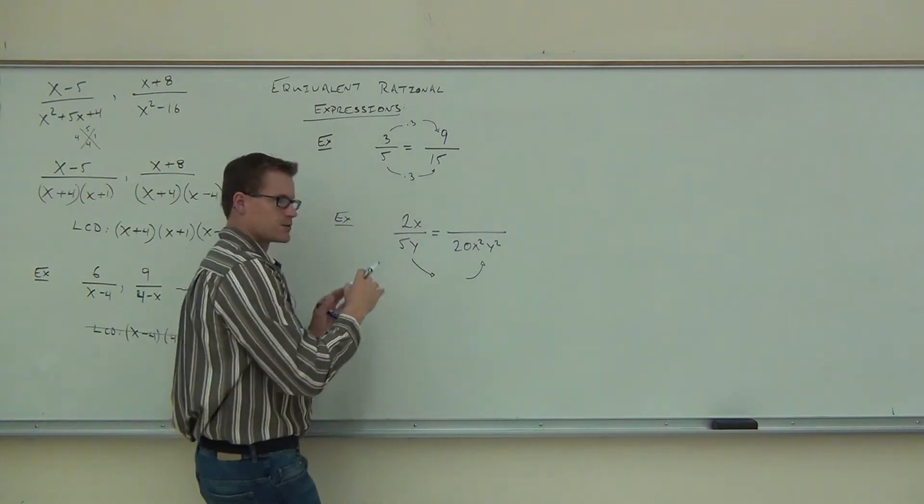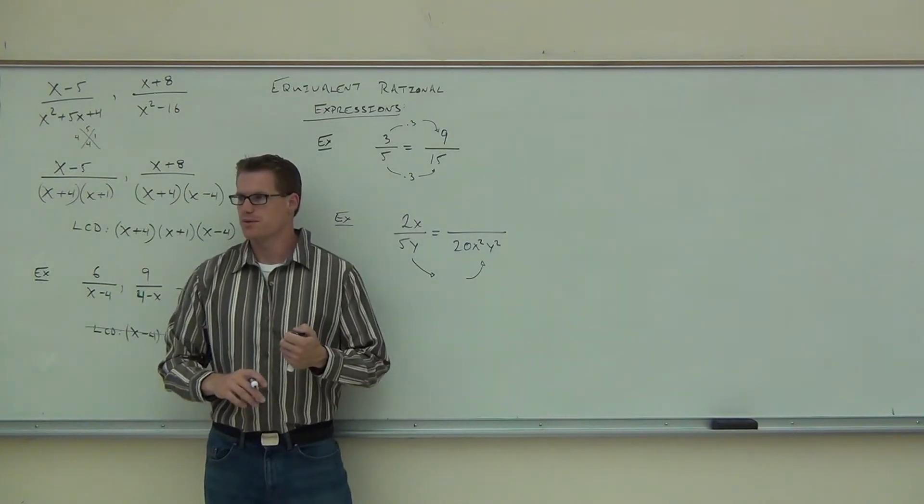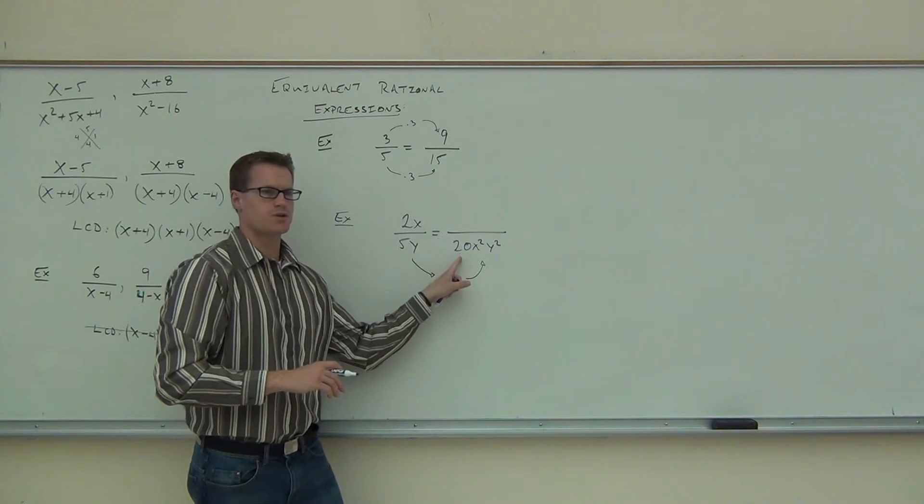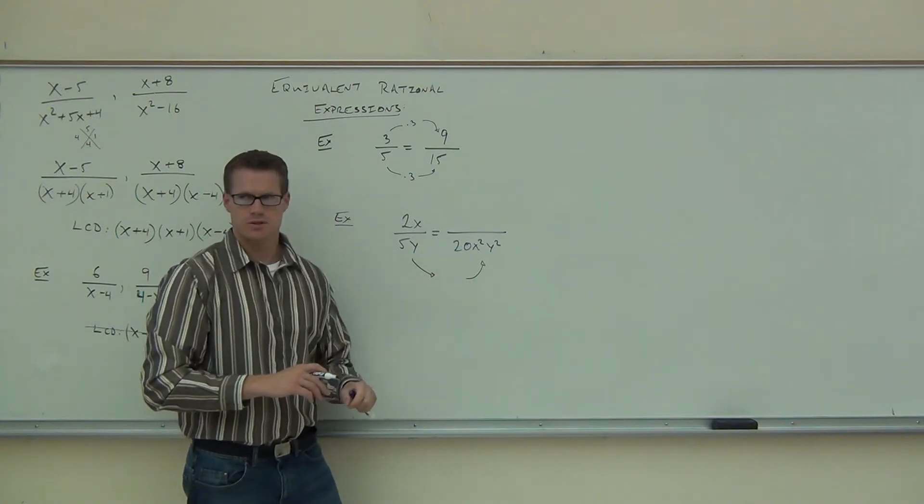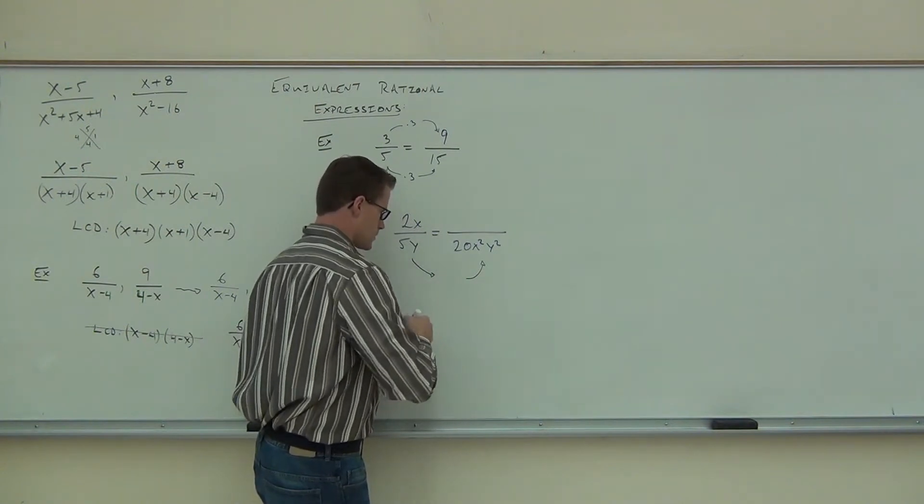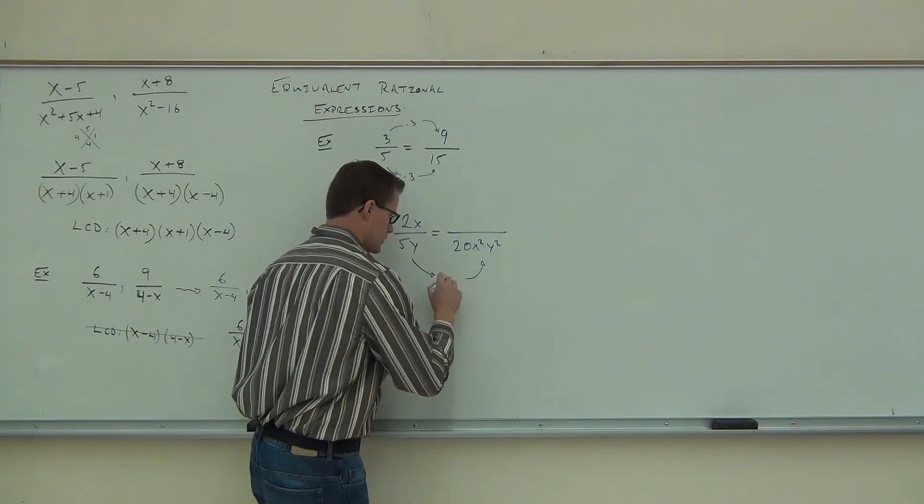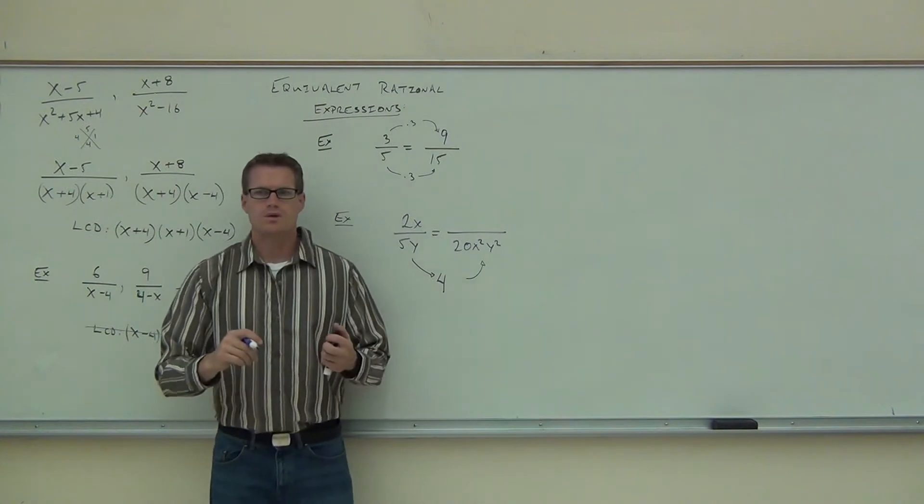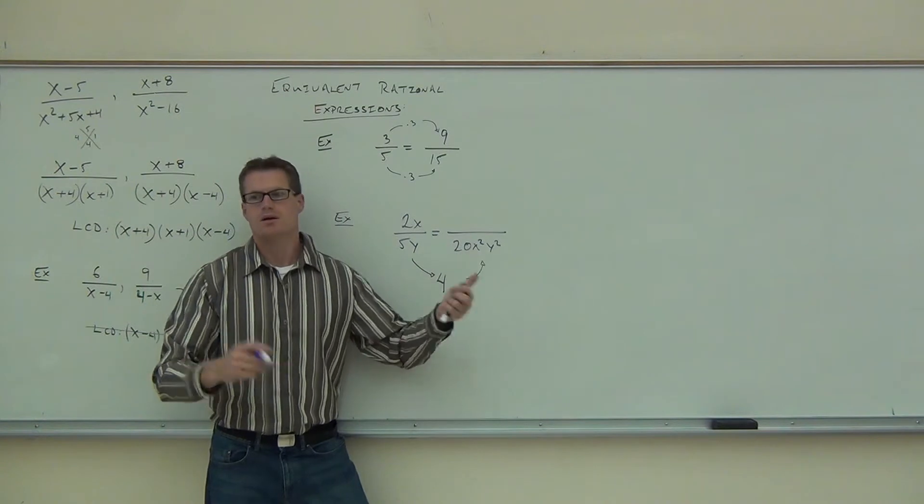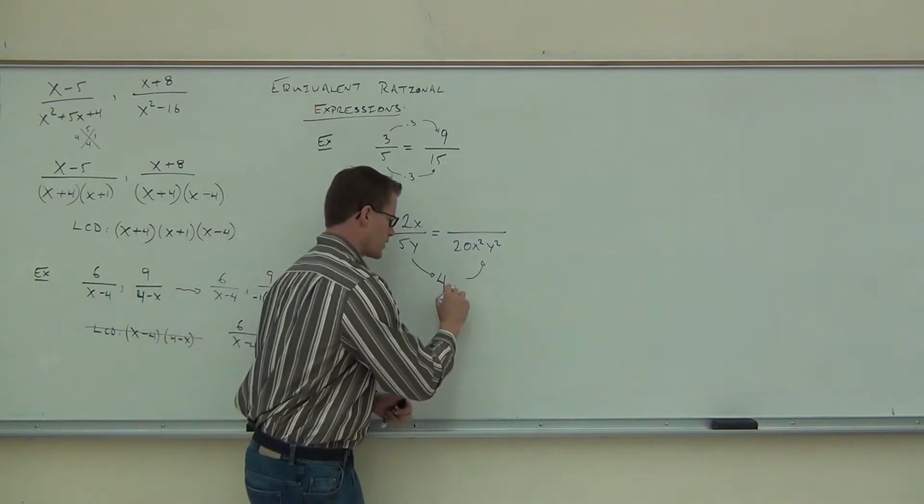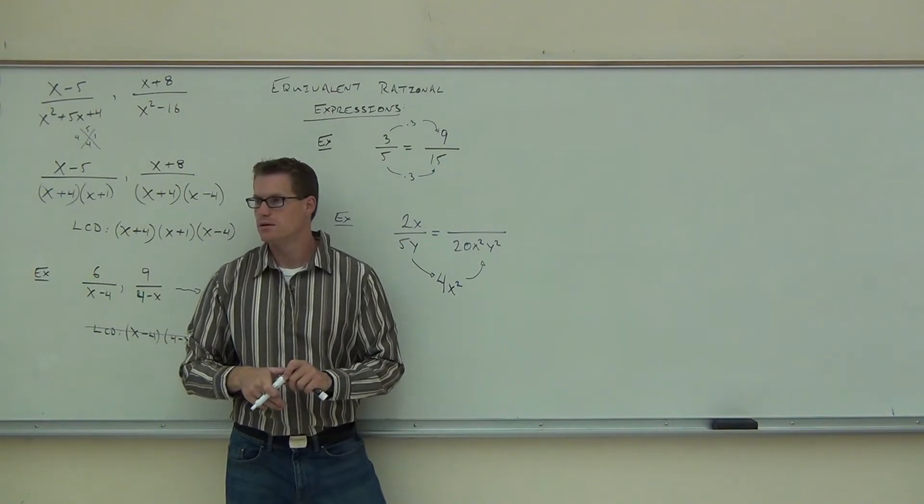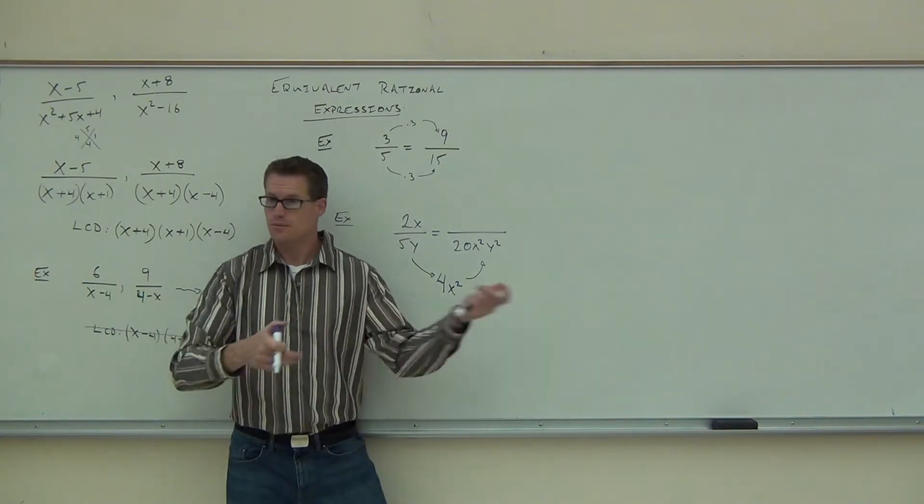So down here we're going to write how in the world they're getting from 5y to 20x squared y squared. So we have to multiply. Answer the number first, the 5 to the 20. What do you multiply by to get from here to here as far as the number goes? You all see the 4? 5 times 4 gives you 20. Also, what else is over here that you didn't have over here? What do you need to multiply by? X squared. Great. X squared has to be in there somewhere. Fantastic. Anything else? Y.